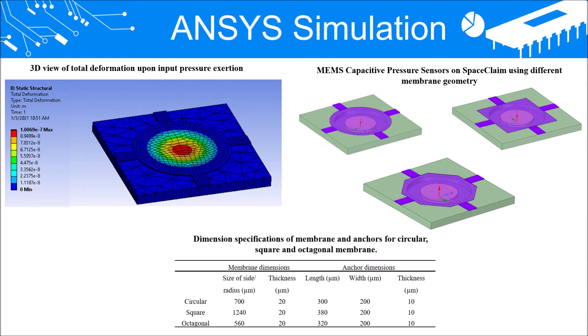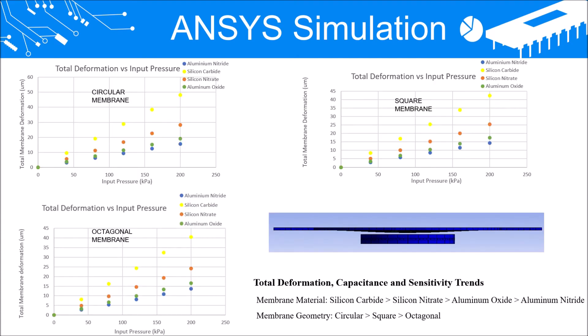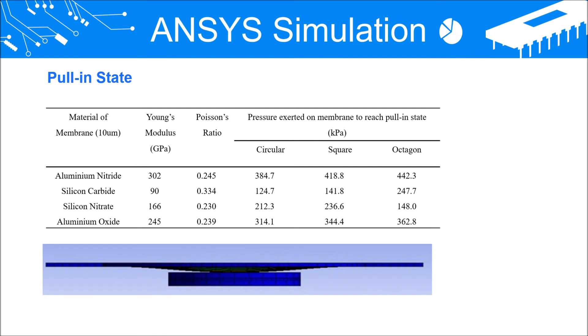MEMS Capacitive Pressure Sensor using different membrane geometry was designed on the interface with its respective dimension specifications of membrane and anchors listed in this table. Membrane deflection results show that circular membrane has the highest deflection, followed by square membrane and then octagonal membrane. For comparison between different membrane materials, silicon carbide shows the highest membrane deflection, followed by silicon nitride, aluminium oxide, and finally aluminium nitride. High membrane deflection value leads to high capacitance and high sensitivity value. The pull-in state of the sensor, whereby the membrane deforms upon maximum pressure exertion and touches the upper electrode, is also shown.